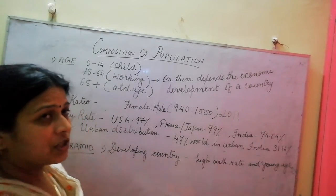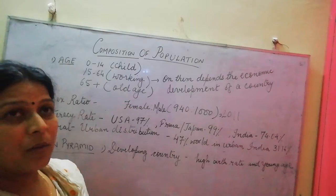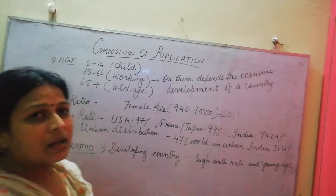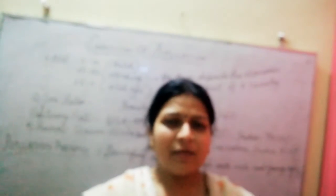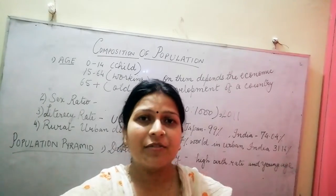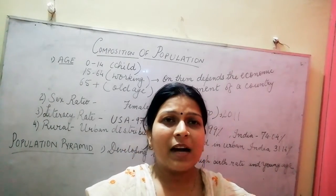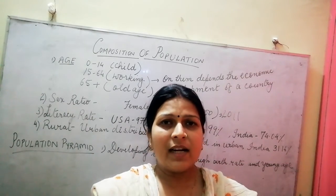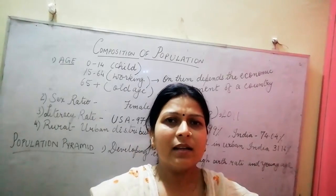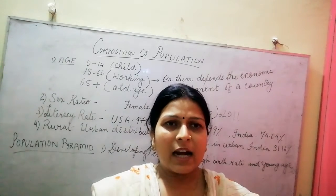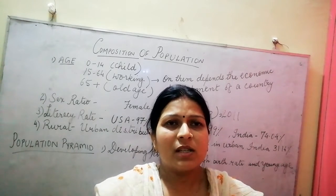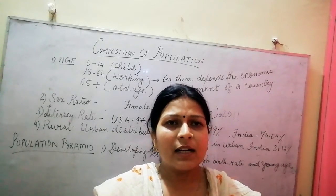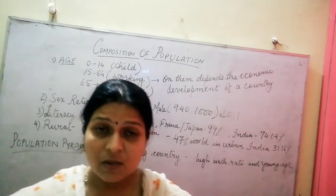The next topic is the population pyramid. The population pyramid shows the age-wise distribution — children at the base, then the working group in the middle, and the old age group at the top. We will see which type of population is present in which country, especially in developing countries.